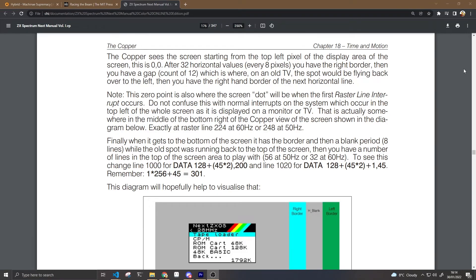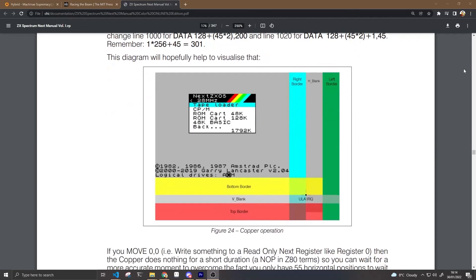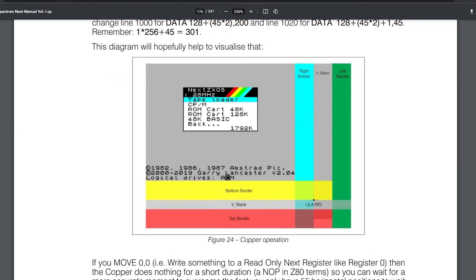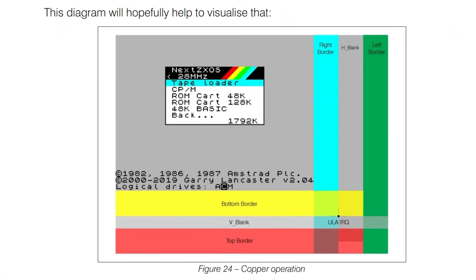LCDs don't have electron beams, but that's how video is generated - top to bottom, left to right, with little gaps at the side and bottom to allow this non-existent electron beam to physically move across the screen. Even your fancy HDMI display you use to watch Netflix is still doing the same thing, pretending to be a dumb analog TV from the 1960s. We can feed the copper a list of instructions and it'll perform them very precisely.